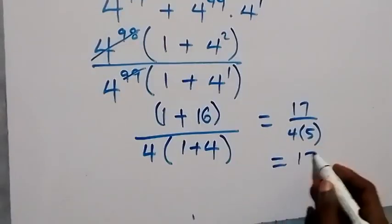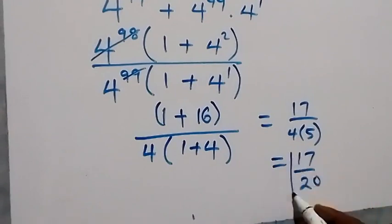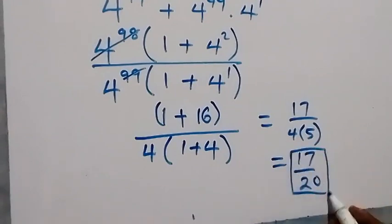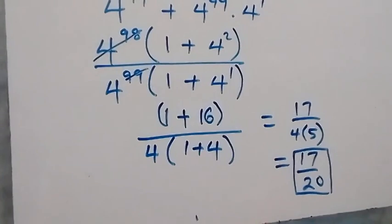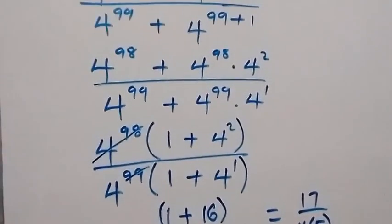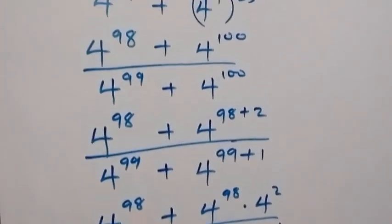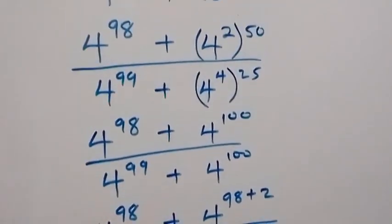So the simplified form of this problem is 17 over 20. We have come to the end of this class. Thank you for watching — don't forget to subscribe for more exciting videos and join the notification bell. See you next class, bye for now.